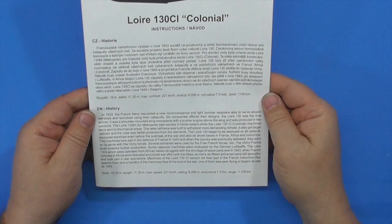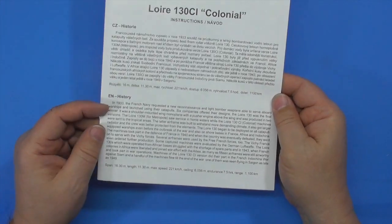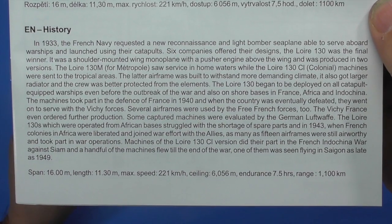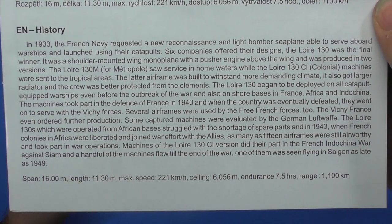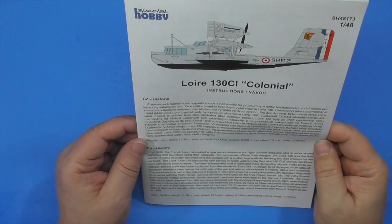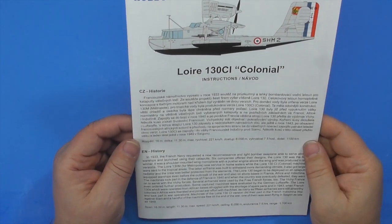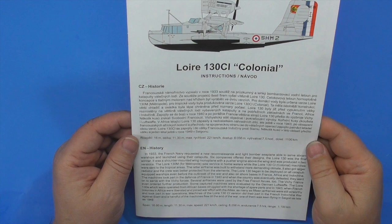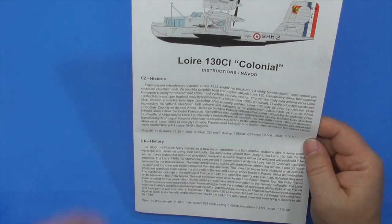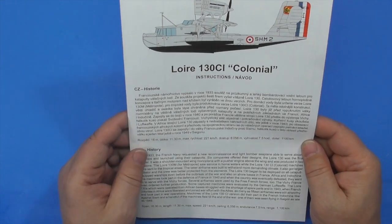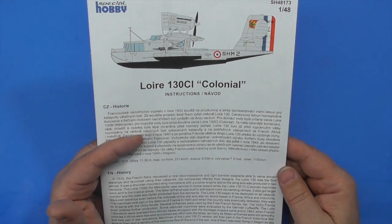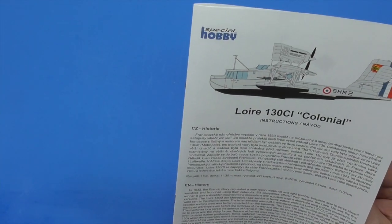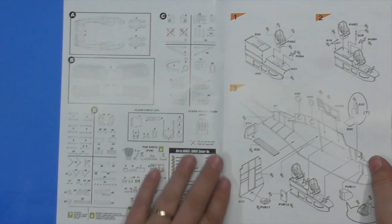And we've got our instructions. Check, English. There's your little English story of the aircraft. Freeze it and read it if you'd like. Loire Colonial, French Navy. That explains the name. Let's see. Some machines were evaluated by the German Luftwaffe. This was made in 1933, not the kit, the actual aircraft.